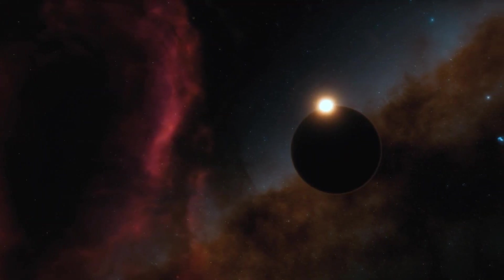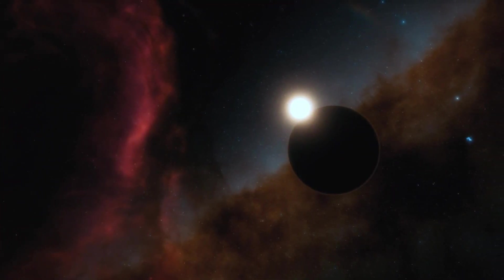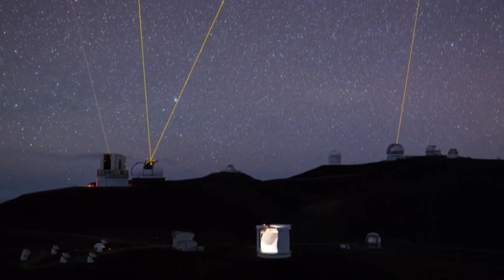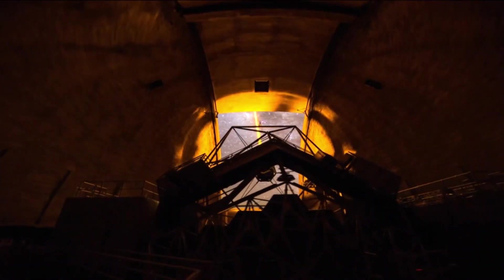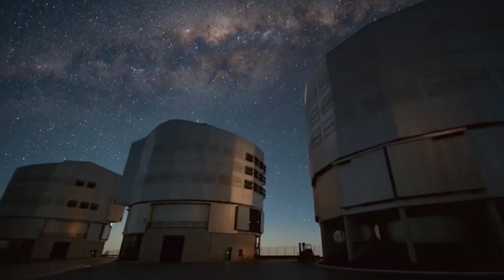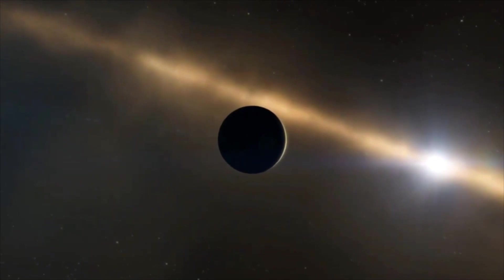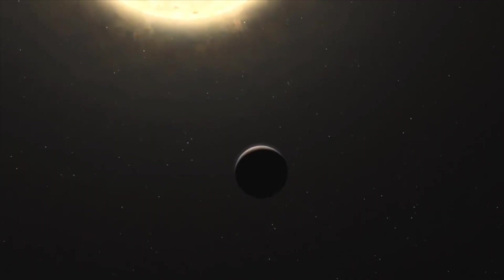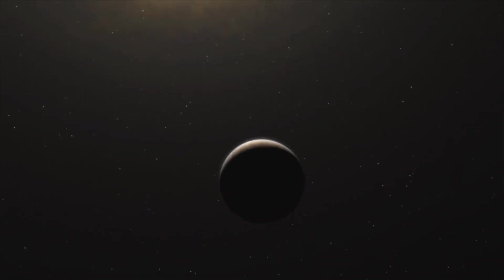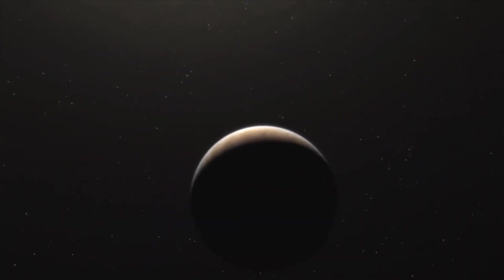This is the transit method of detection. This is how the planet Fomalhaut b was discovered, but it later turned out to be a cloud of cosmic dust. There are times when a star wobbles slightly. That can also mean it's being affected by a planet. That's how Alpha Centauri b was found, the one that had to be declared non-existent after it was discovered.